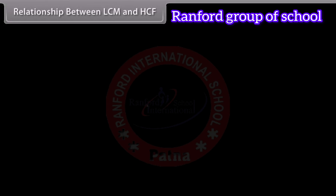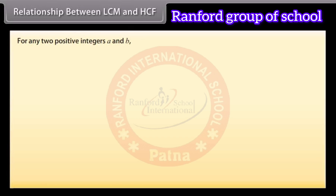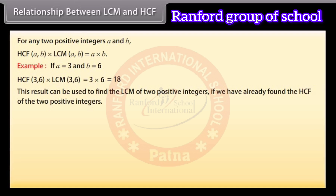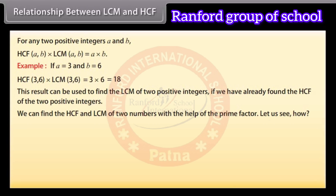For any two positive integers A and B, HCF(A, B) multiplied by LCM(A, B) equals A multiplied by B. For example, if A equals 3 and B equals 6, then HCF(3, 6) into LCM(3, 6) equals 3 into 6, which equals 18. This result can be used to find the LCM of two positive integers if we have already found their HCF, using prime factorization.